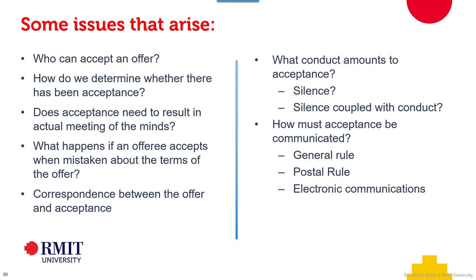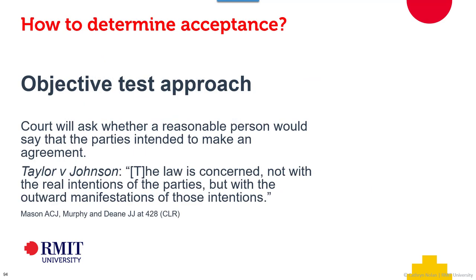There are a group of issues that keep arising around the different ways that people can accept. When and where a contract is made are often the kind of cases we look at. We've got to ask ourselves when and where if acceptance is communicated by a letter, by some sort of electronic transaction, online, by email, or by a thumbs-up emoji. We use an objective test — there are some basic rules, but we use an objective test.